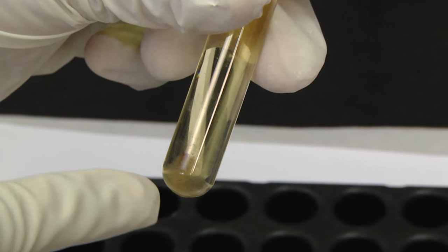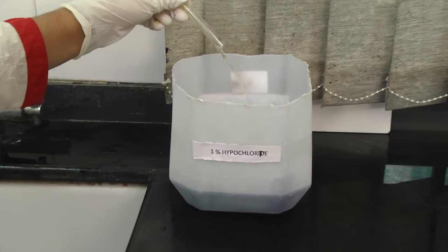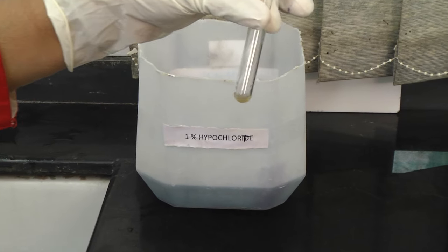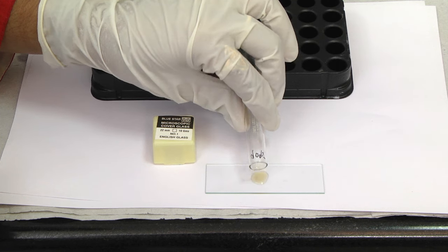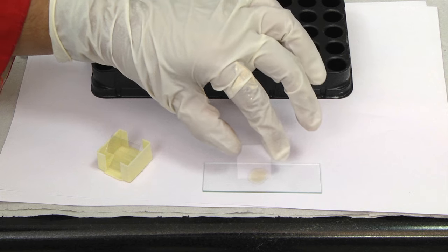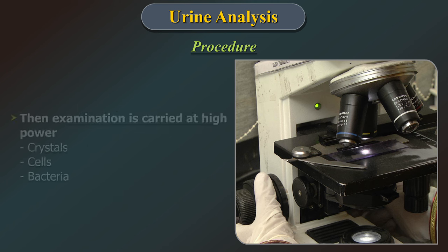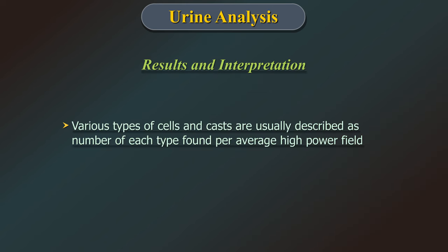Equipment: clean dry glass slides, cover slips, test tubes, microscope, centrifuge. Procedure: follow standard precautions. Label the test tube with the patient ID. Mix the sample well before testing. Transfer 10-15 ml of sample to a test tube and centrifuge at 1500 rotations per minute for 10 minutes. After centrifugation, concentrated sediment is collected at the bottom with a clear supernatant. Pour off the supernatant until 0.2 ml remains. Resuspend the sediment by flicking the bottom of the tube. Place a drop of resuspended sediment on a glass slide, apply a cover slip, and examine first under low power to identify crystals, casts, squamous cells and other large objects, then at high power to identify cells and bacteria.